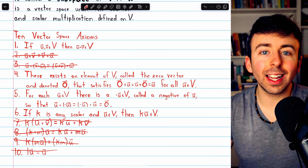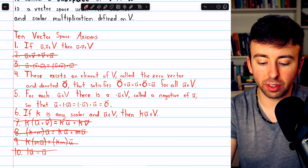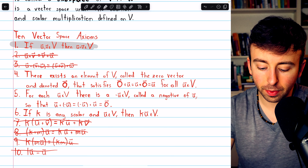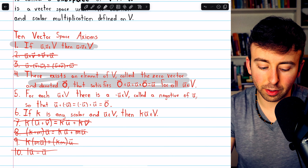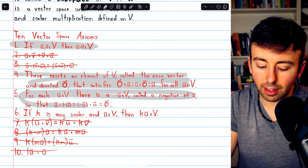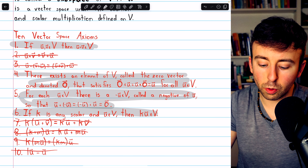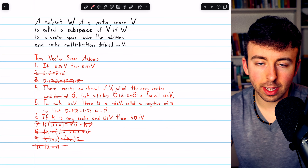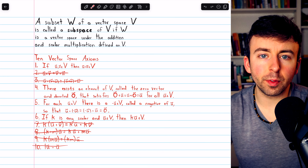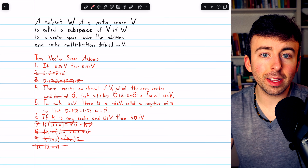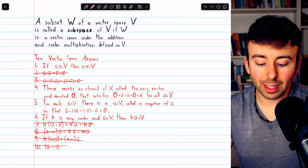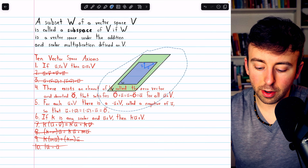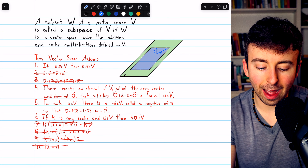The only four non-trivial axioms we need to verify to show something is a subspace are: axiom 1, closure under vector addition; axiom 4, the existence of a zero vector; axiom 5, the existence of vector negatives; and axiom 6, closure under scalar multiplication. These properties are not necessarily inherited from V. A subset doesn't have to contain the zero vector or negatives, and closure under vector addition and scalar multiplication don't have to hold either.